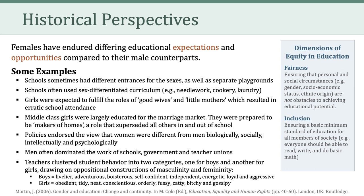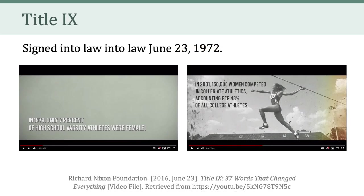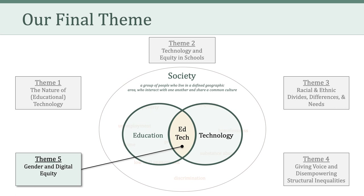That's quite a list that really sheds some light on the differing educational expectations and opportunities that females have endured relative to their male counterparts. Of course, in 1972 in the United States, we had Title IX — the federal law effectively barring sex discrimination in school sports and academics — and that has had a significant impact on the expectations and opportunities of women. In the weeks ahead, we're going to focus on how that historical perspective and Title IX have influenced gender and digital equity, and we're going to examine how gender intersects with technology in general and educational technology in particular. That's all we have time for today. Have a great week, and I'll see you in Canvas.